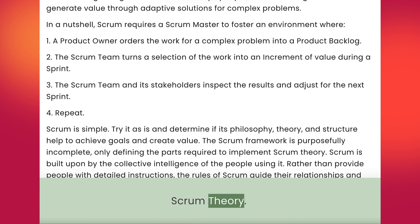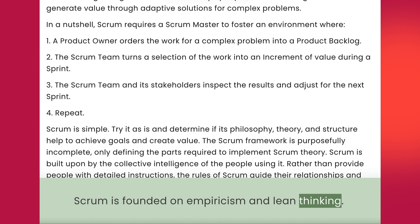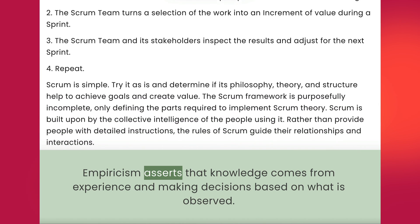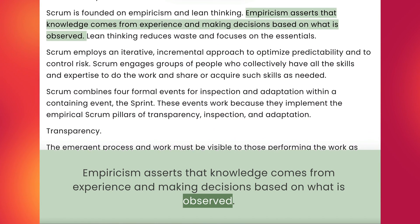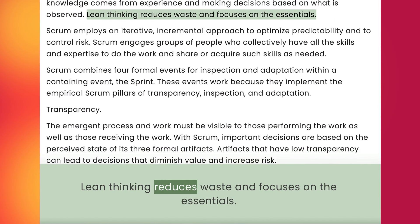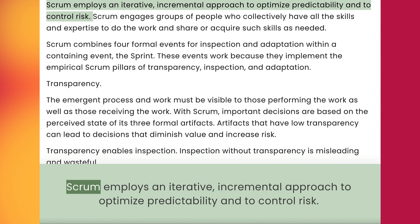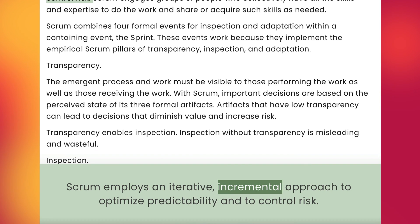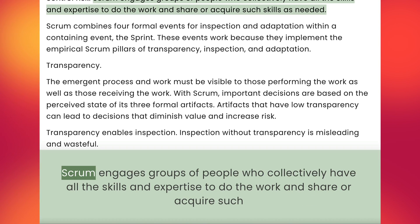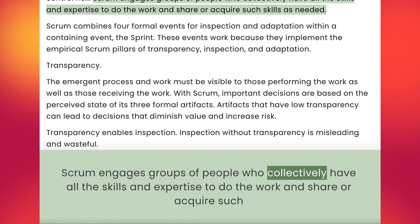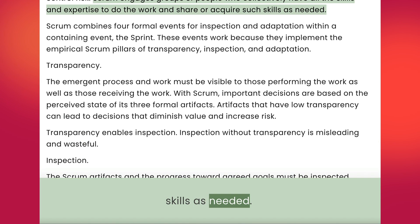Scrum Theory. Scrum is founded on empiricism and lean thinking. Empiricism asserts that knowledge comes from experience and making decisions based on what is observed. Lean thinking reduces waste and focuses on the essentials. Scrum employs an iterative, incremental approach to optimize predictability and to control risk. Scrum engages groups of people who collectively have all the skills and expertise to do the work and share or acquire such skills as needed.